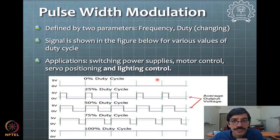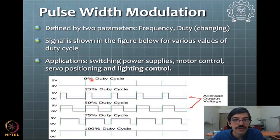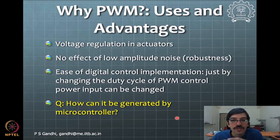There are mainly two parameters for PWM: one is frequency and the other is duty. The frequency parameter is usually a fixed parameter and the duty is what changes continuously. During operation, if you want more power to be delivered depending upon your control input or computation, you will change this PWM duty cycle. You can see signals for different duty cycles — 75% of the time the on-time is 75% of the total cycle time. That's how you drive some average voltage into the application.